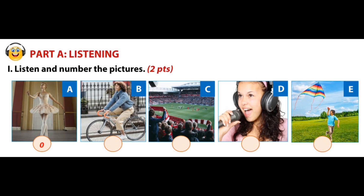Now listen again. Number one: she's singing. Number two: they're watching a match. Number three: he's flying a kite. Number four: she's riding a bike. That's the end of part one.